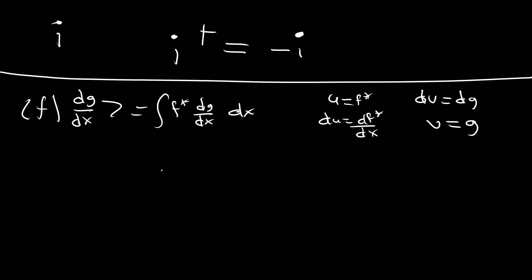Then we can just use our uv minus integral vdu formula. So we're going to get f star g evaluated over all space, minus the integral over all space of df star dx dx dx.